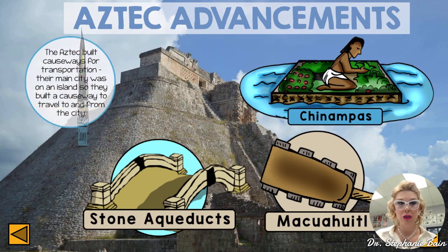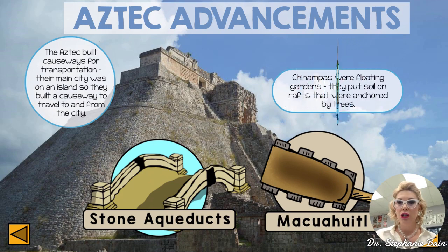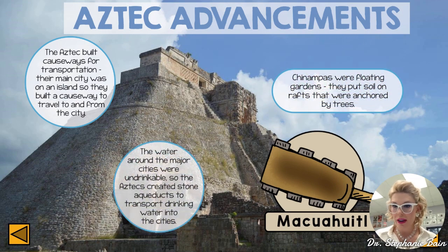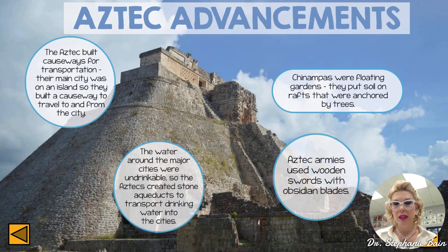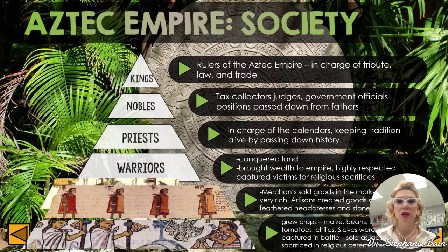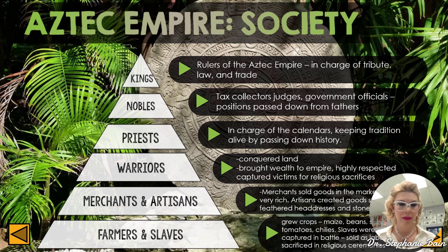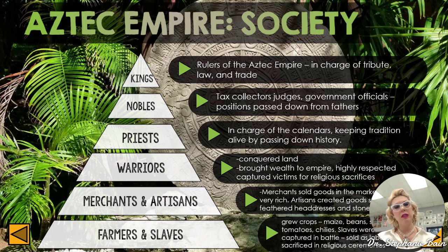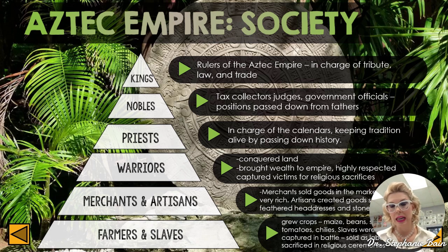Key Aztec technologies included causeways (bridges), chinampa floating gardens, stone aqueducts for water supply, and the macuatl — a wooden sword with an obsidian blade. Aztec social structure consisted of the king at the top, followed by nobles, priests, warriors, merchants, artisans, and farmers and slaves at the bottom — a caste system similar in concept to other ancient societies.